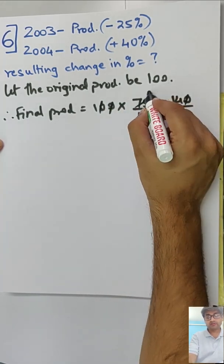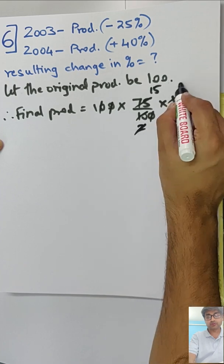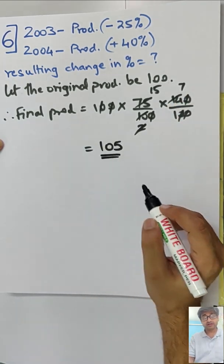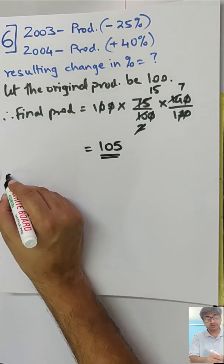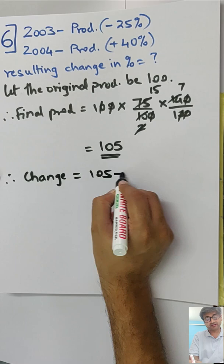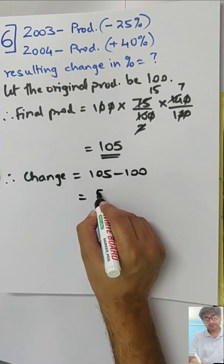Therefore final production, 100 into 25% reduced so 75, and 40% increased so 140. Two zeros go away, one zero goes away, 5 into 15 is 75, so 105. This is not your percent.